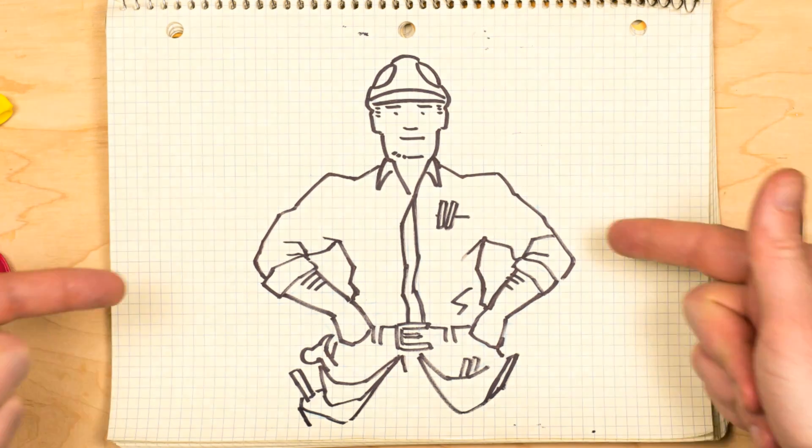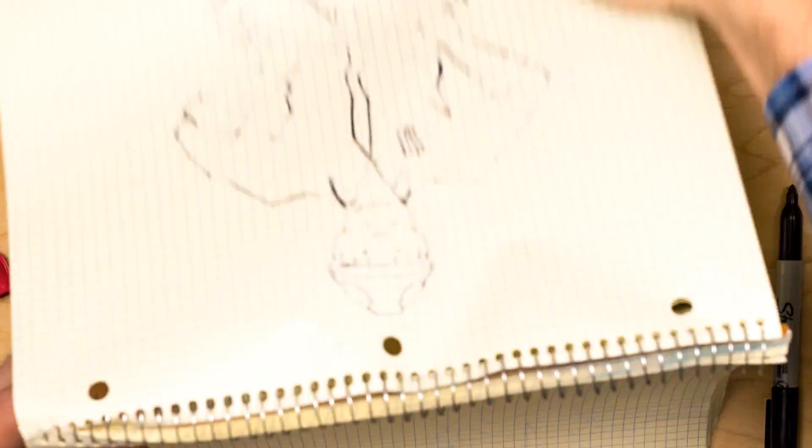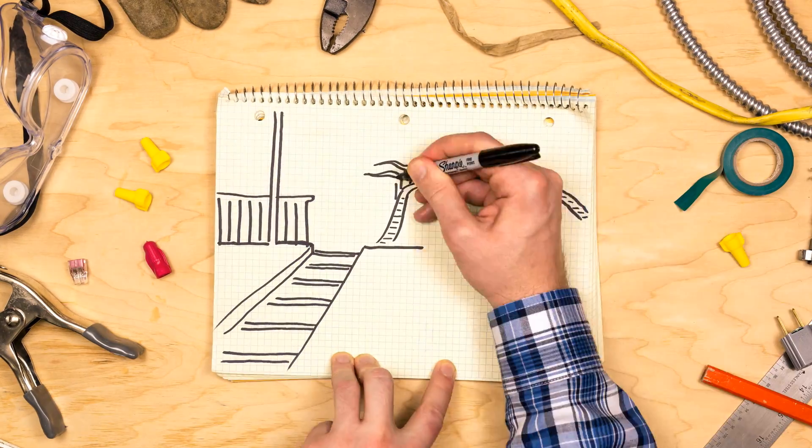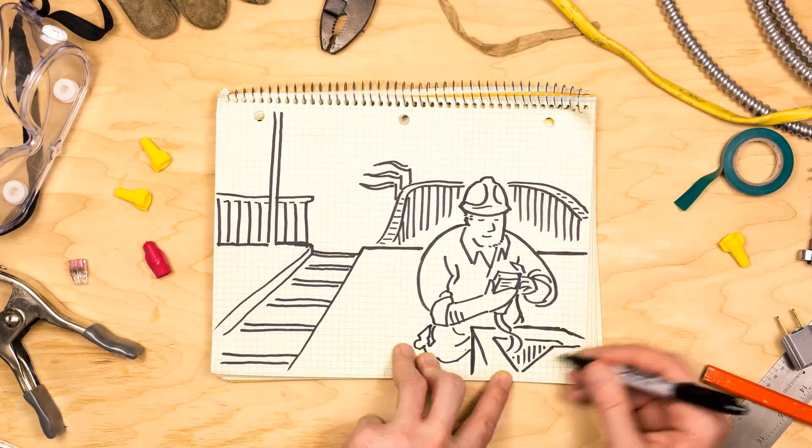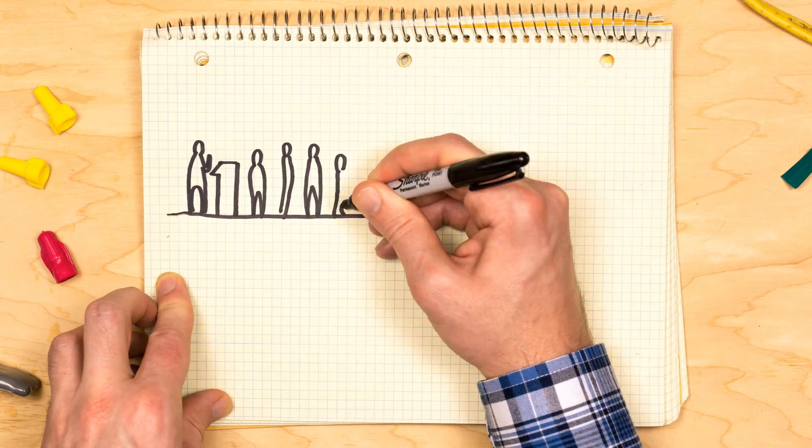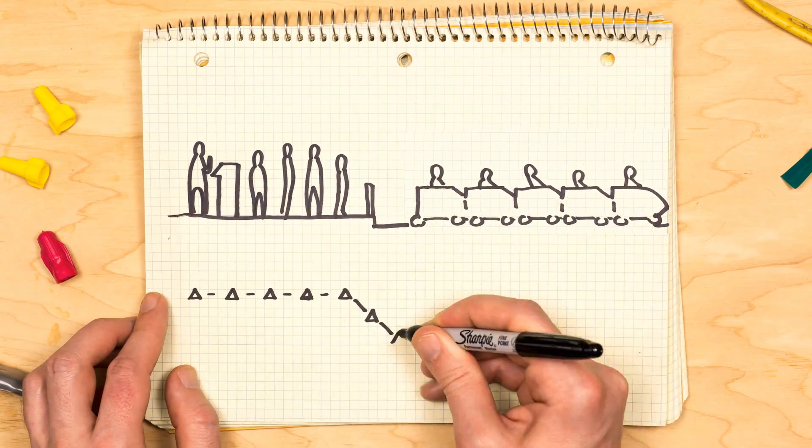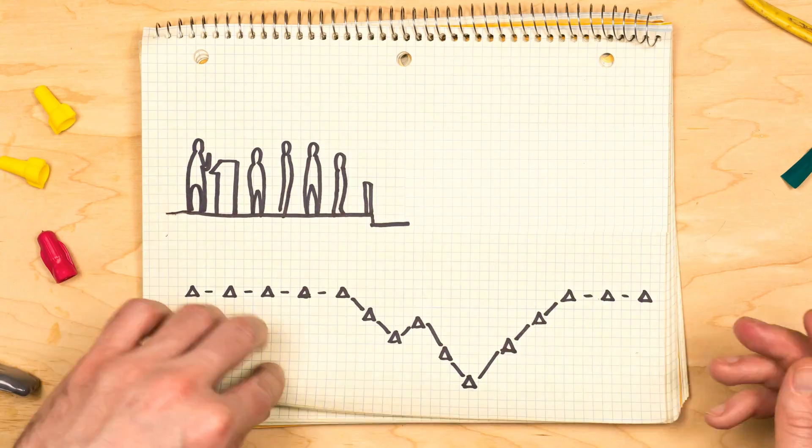But no worries, Dan the electrician is here to save the day. Upon his visit, Dan quickly discovers the source of the problem. Every time the park's roller coaster starts, there's a voltage dip. With the problem diagnosed,